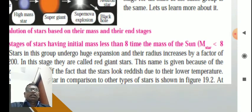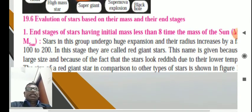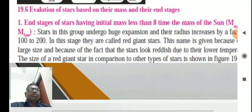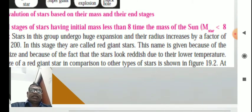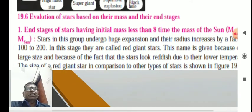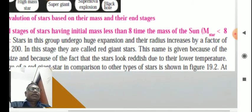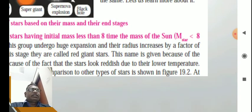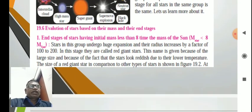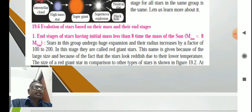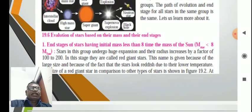Let us learn about it. First, the end stages of stars having initial mass less than eight times the mass of the sun. The stars in this group undergo huge expansion and their radius increases by a factor of 100 to 200. In this stage, they are called red giant stars.